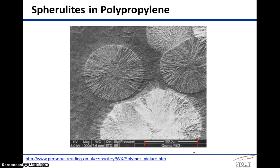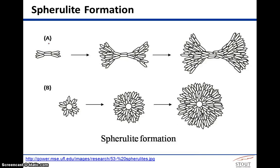Looking at how spherulites grow: you would start with these crystalline domains nucleating at slightly cooler spots in the polymer as it cools down. The process of crystallization begins and then makes these domains that spiral outward.